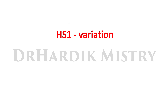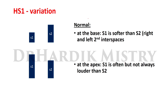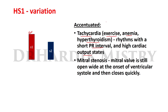Now we begin with abnormal heart sounds. Heart sound one variations — physiological variations: at the base, S1 is softer than S2, heard at the right and left second intercostal spaces. At the apex, S1 is often, but not always, louder than S2. So at the base S1 is softer than S2, but at the apex S1 is louder than S2.